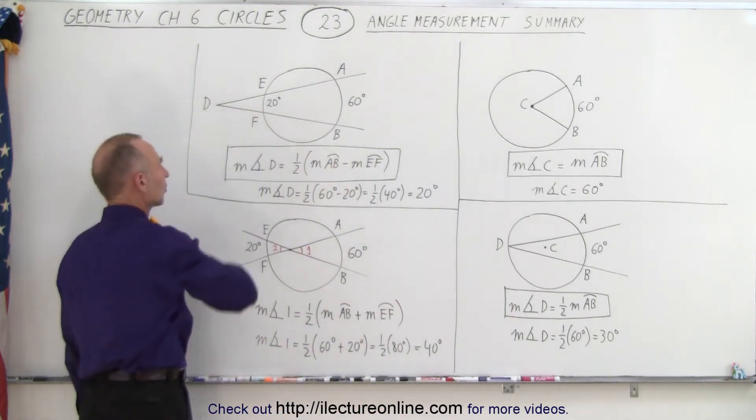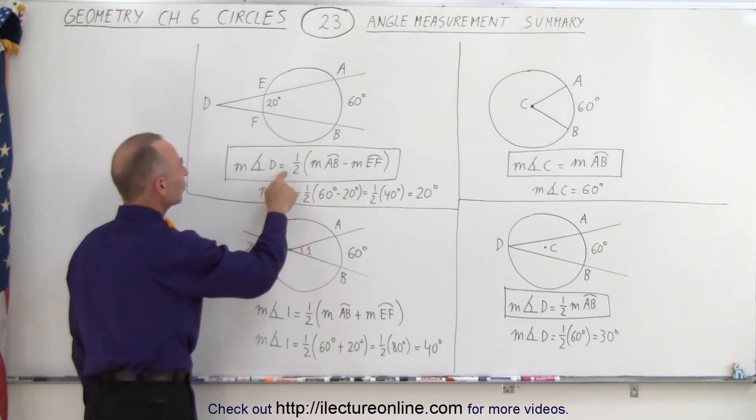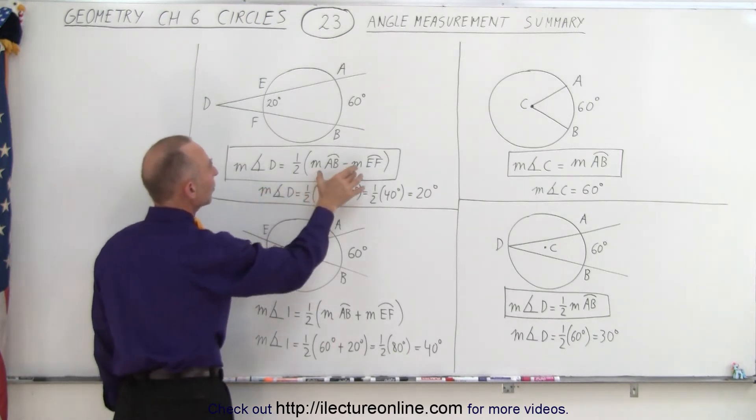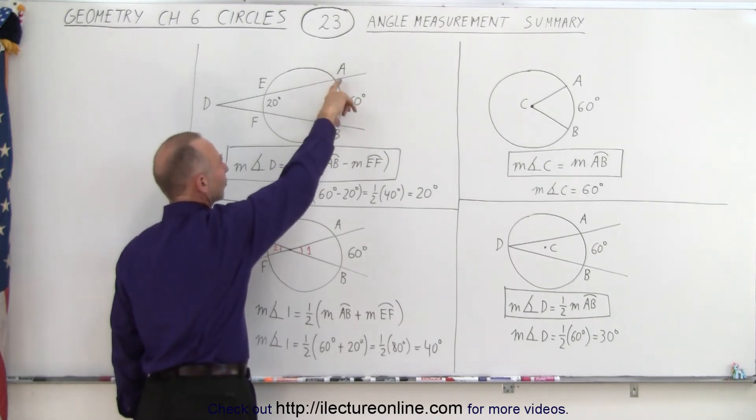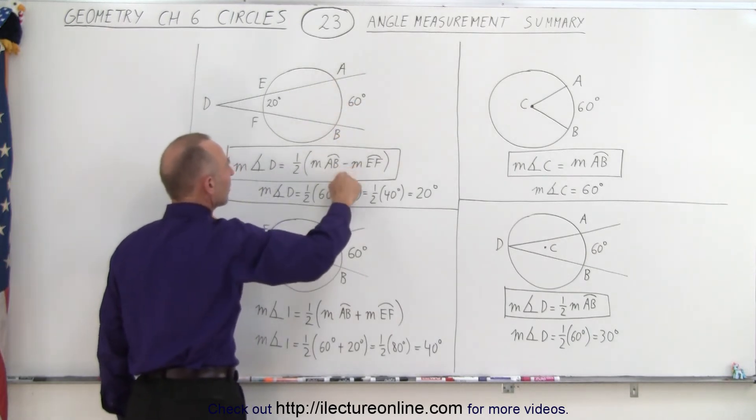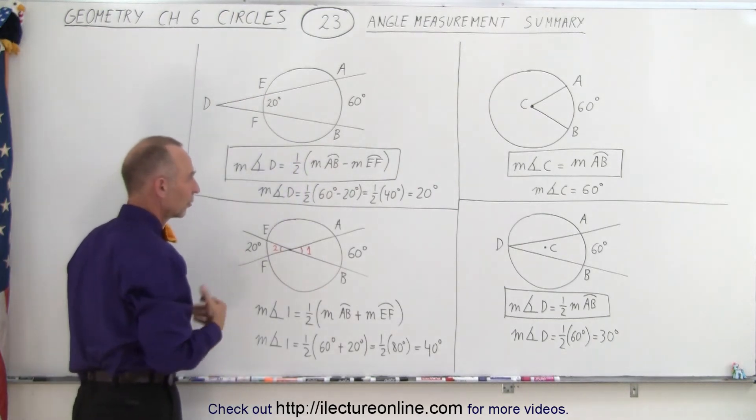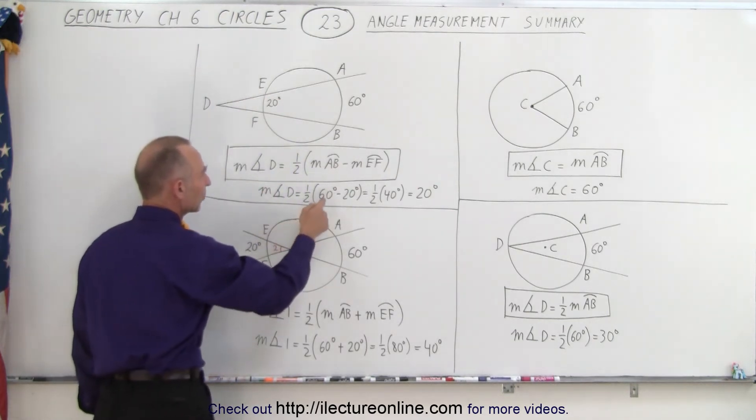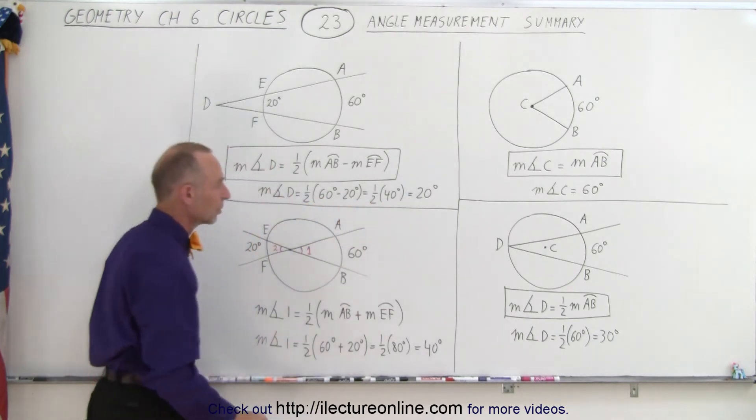What if we put the point outside the circle? Then the measure of the angle outside the circle is equal to one half times the difference between the measure of the arc that's intersected on the far side of the circle minus the measure of the arc that's intersected on the close side of the circle. And so therefore, it's one half times 60 minus 20, one half times 40 or 20 degrees.